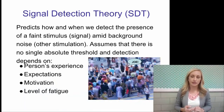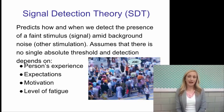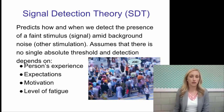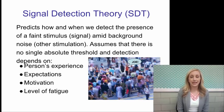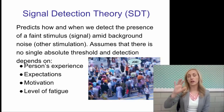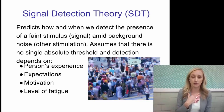Signal detection theory is a theory that gives a spin on absolute threshold. It predicts how and when we detect the presence of a faint stimulus, like a signal, amid background noise or other stimulation. It assumes that there is no single absolute threshold, and that our detection depends on a person's experience detecting that item, expectations, motivation, and level of fatigue — if you're tired, you're not going to be as good at it.